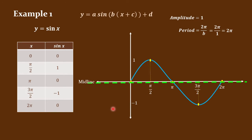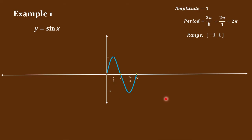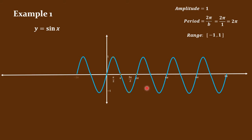The range would be all possible values of y for the given function. In this case, we have negative 1 to 1. For the domain, which is the set of all possible values of x, remember that we are just sketching one period or one cycle of the function y = sine x. But this pattern will be repeating infinitely following the interval of 2 pi. Therefore, the domain would be negative infinity to infinity.